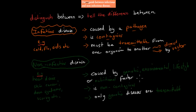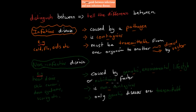Non-infectious diseases are caused by genetic, environmental, lifestyle, or nutritional factors. This is different to infectious, which is caused by a pathogen. So infectious is caused by a pathogen, whereas non-infectious is caused by genetic, environmental, lifestyle, or nutritional factors. It's also non-contagious, whereas infectious is contagious. Only genetic diseases can be transmittable, whereas with infectious disease all must be transmittable.